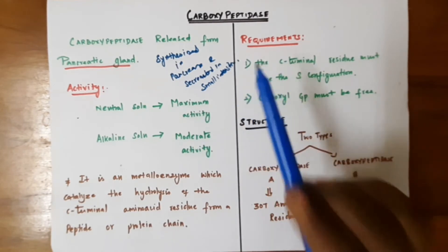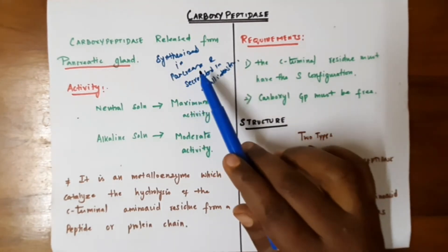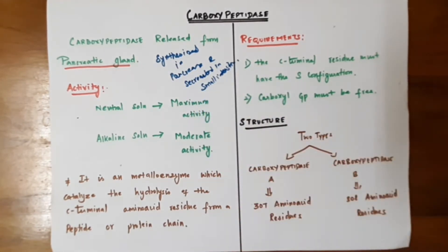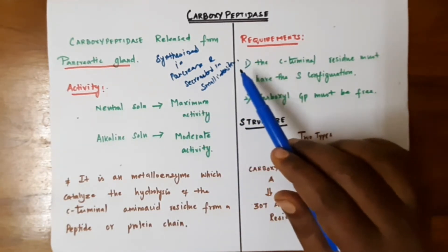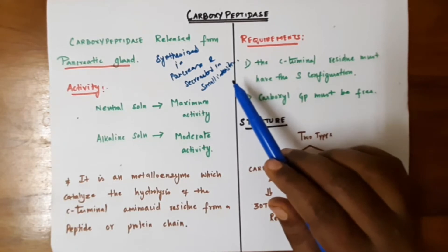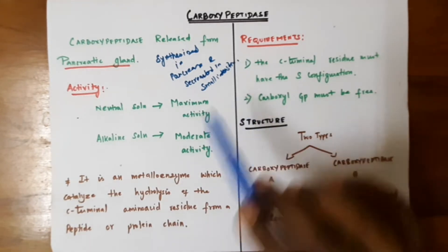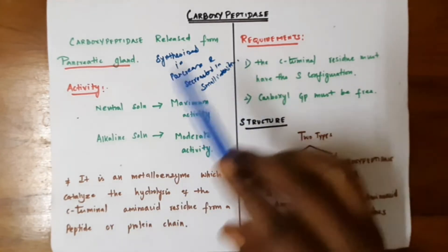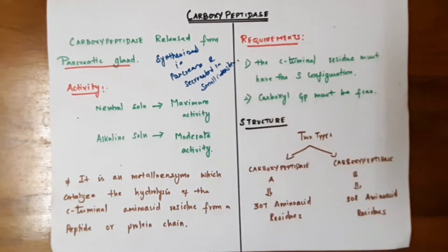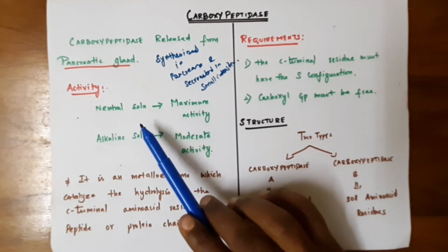Carboxypeptidase is released from the pancreatic gland — it is synthesized in the pancreas and secreted in the small intestine of the human body. The purpose of carboxypeptidase is to catalyze the degradation of protein molecules into several amino acid units. This reaction happens in the small intestine.